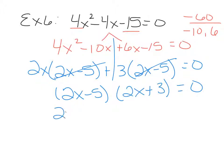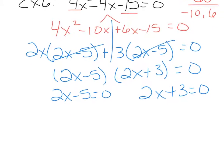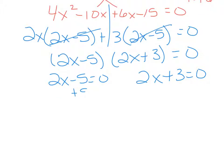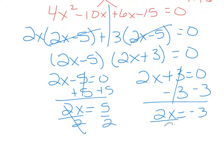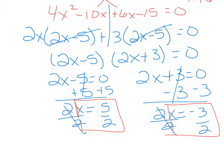The common factor is 2x minus 5. When factored out, I'm left with 2x plus 3. Set each factor equal to 0: 2x minus 5 equals 0 — add 5 then divide by 2 — gives x equals 5 halves. And 2x plus 3 equals 0 — subtract 3 then divide by 2 — gives x equals negative 3 halves. Those are your two solutions.